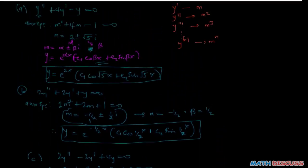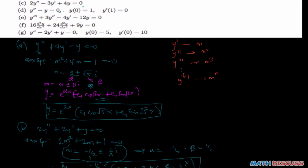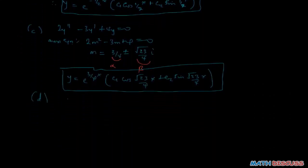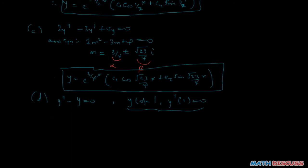Now we go to part d. Part d is not just a homogeneous differential equation but also an initial value problem — we are given some initial values. We want to find a particular solution after finding the general solution. The equation is y'' minus y equals zero, with initial conditions y(0) equals 1 and y'(1) equals 0. We form the auxiliary equation: m squared minus 1 equals zero.